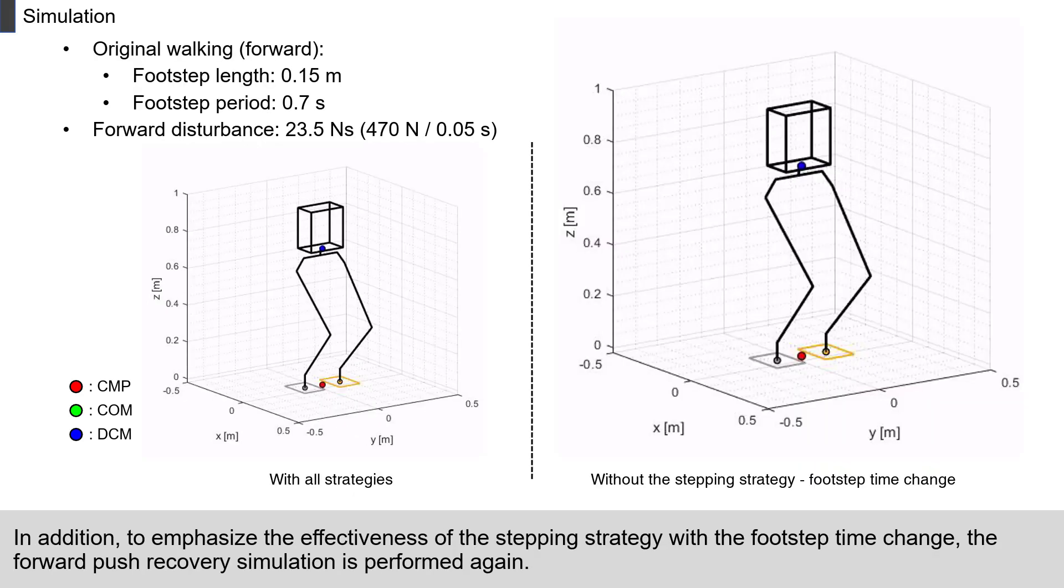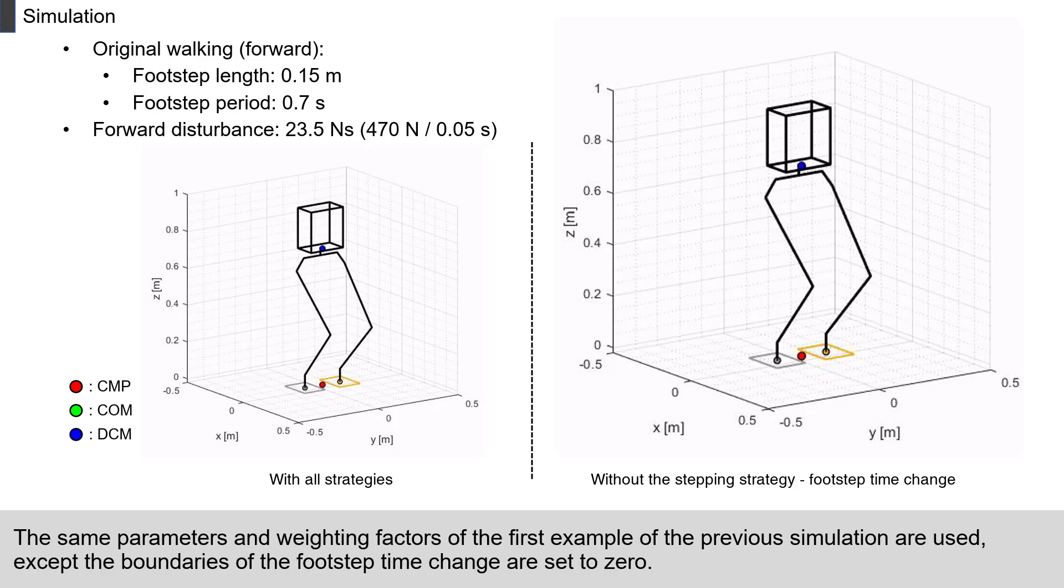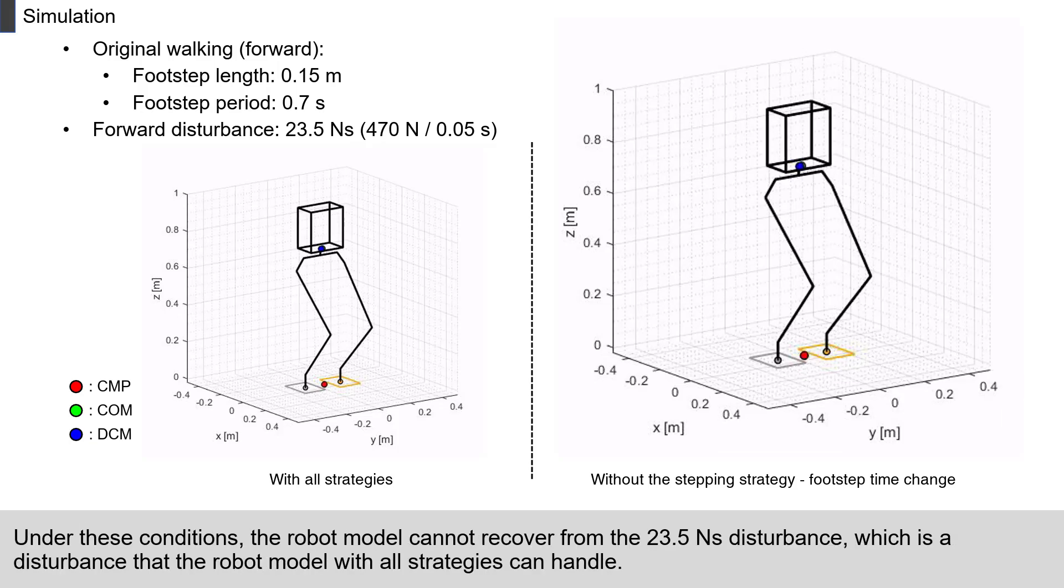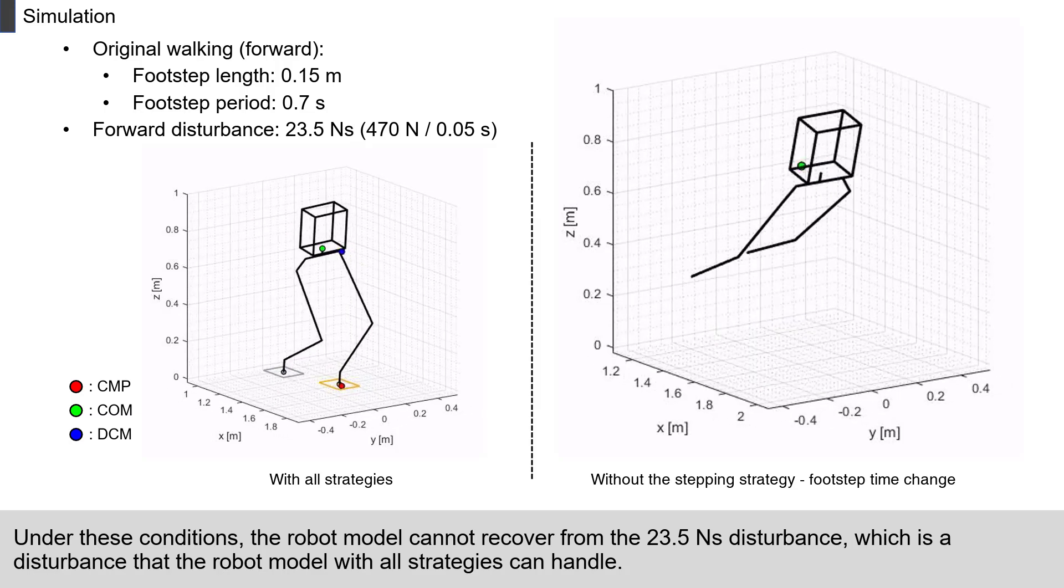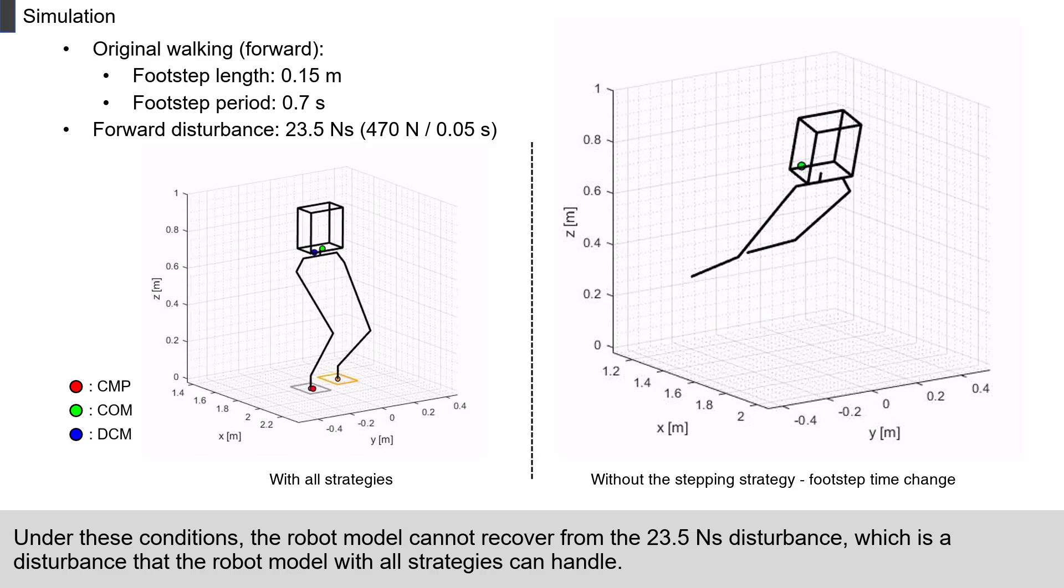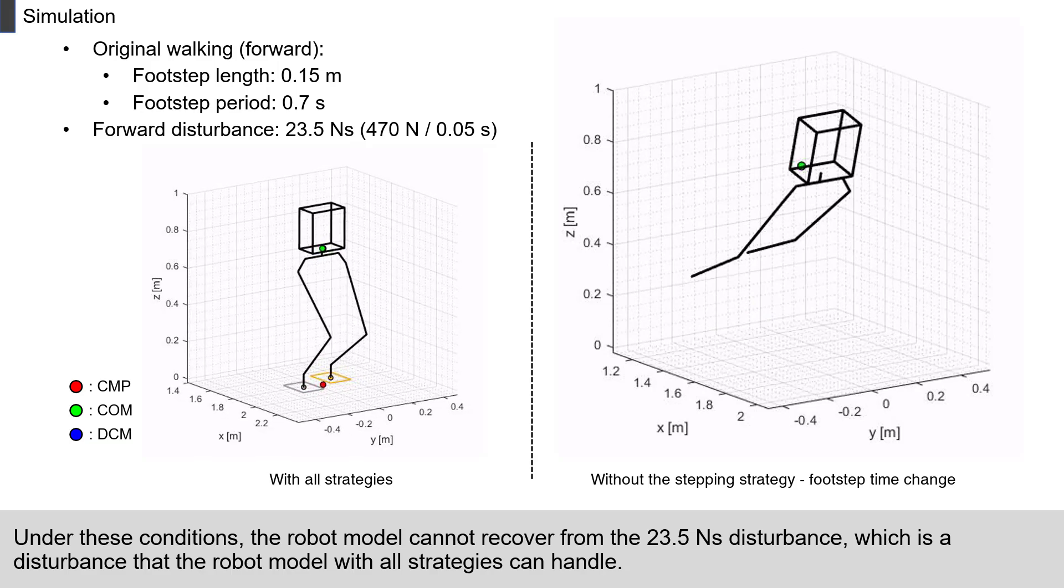In addition, to emphasize the effectiveness of the stepping strategy with a footstep time change, the forward push recovery simulation is performed again. The same parameters and weighting factors of the first example of the previous simulation are used, except the boundaries of the footstep time change are set to zero. Under these conditions, the robot model cannot recover from the 23.5 Nm second disturbance, which is a disturbance that the robot model with all strategies can handle.